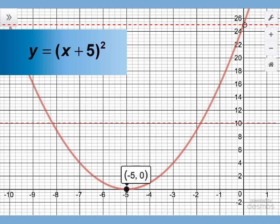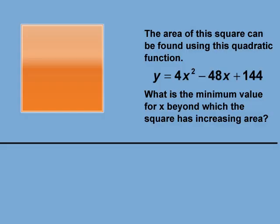Let's look at another example. The area of this square can be found using this quadratic function: y equals 4x squared minus 48x plus 144. What is the minimum value for x, beyond which the square has increasing area?